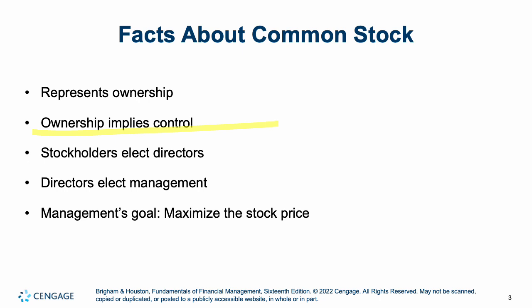Stockholders get to vote and they get to elect the directors. The board of directors — back to the beginning of the class — is who controls a public company. The stockholders elect them, and then the directors elect the management, the C-level offices such as CEO, CFO, and all of that. The goal of good management is to maximize the stock price and, as a consequence, maximize shareholder wealth.